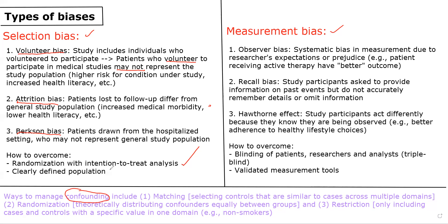The second way to overcome selection bias is having a very clearly defined population at the beginning of your study, such that the sample you're taking from is representative of the actual population of interest that you want to study.